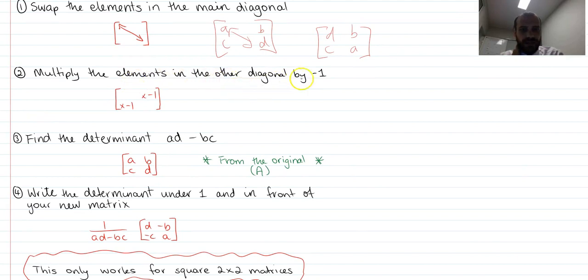Multiply the elements in the other diagonal by negative 1. So this is now going to become, so that B is going to become negative B, and that C is going to become negative C. And that D and that A will stay where I put them in step 1.